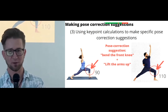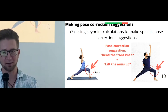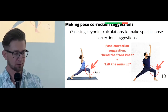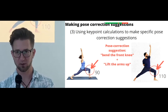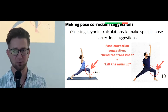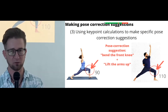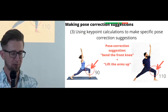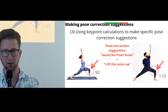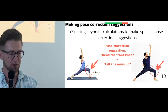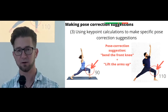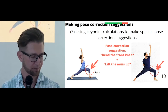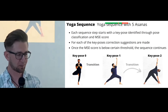Here's a specific example of pose correction using keypoint calculations. On the left, the perfect pose has a 90-degree angle on the right leg's front knee. The captured frame shows 110 degrees instead, so the voice command says 'bend the front knee.' Additionally, one arm is not high enough, so another voice command says the arm should be lifted higher.